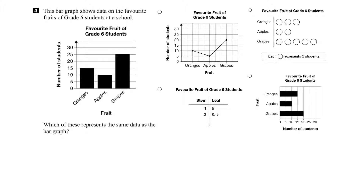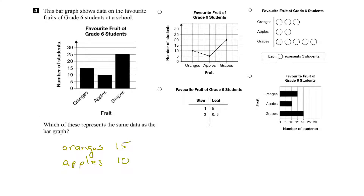The first bar represents the number of students who liked oranges the best. We can see that it's fifteen students who liked oranges. The next bar represents the number of students who liked apples the best, and that would be ten students who liked apples the best.